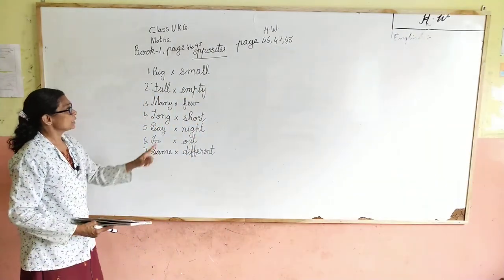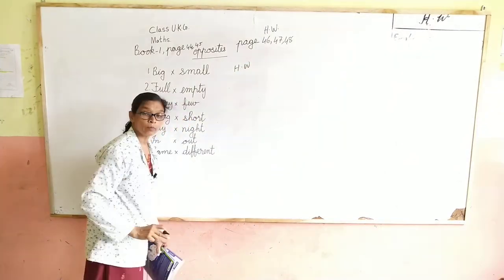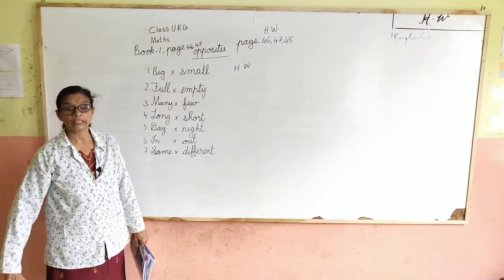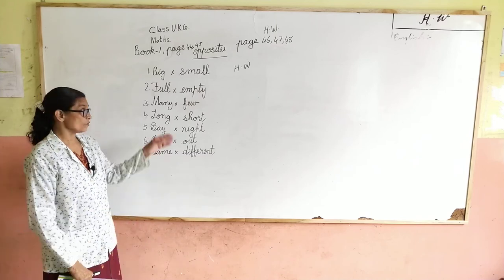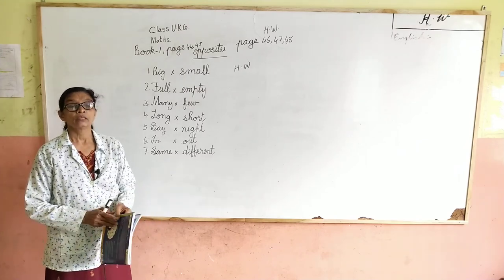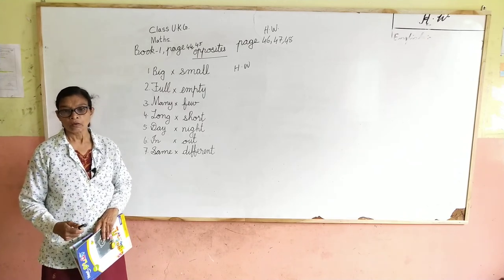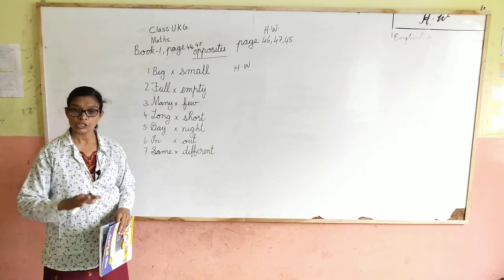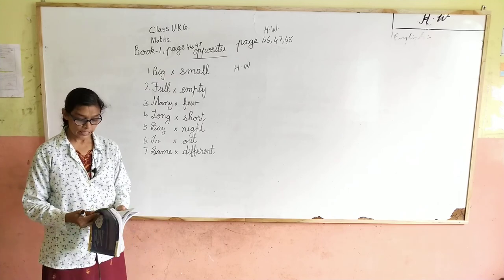You should also write in the notebook. For the next page, add HW and write it again. Daily reading karte raho. Aur tumhara table 2 se lekar 5 tak — LKG mein hum seekha tha — woh daily repeat karte raho, warna beech mein bhool jaoge. Ek din bhi table ko mat chhodna. Roz subah sham ache se reading karte raho. Table theek hai tab hum aage doosra book mein ja sakte hain. Okay, thank you.